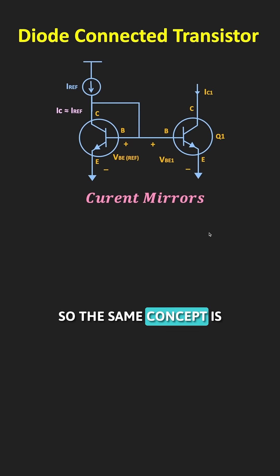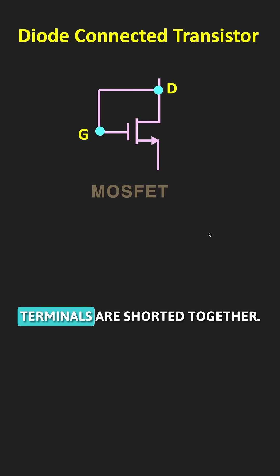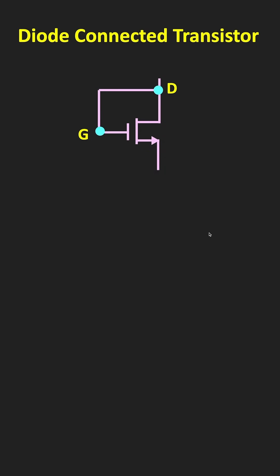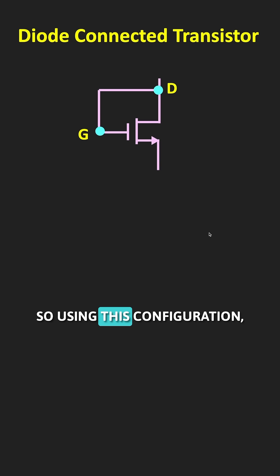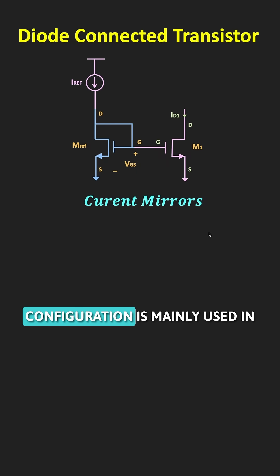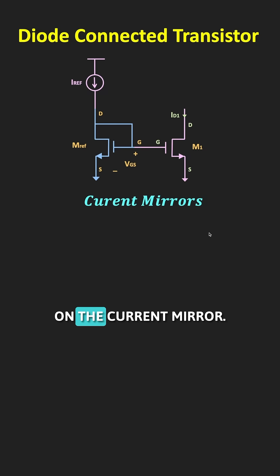The same concept is also used in the MOSFET, where the gate and the drain terminals are shorted together. By doing so, the MOSFET always operates in saturation. Using this configuration, it is possible to design MOSFET current mirrors. This diode-connected transistor configuration is mainly used in current mirror circuits. For more information, you can check the video on the current mirror.